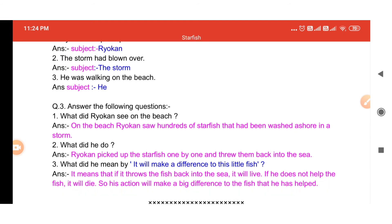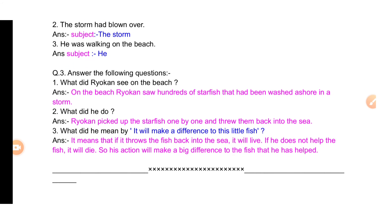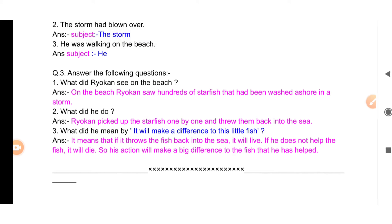Now answer the following questions — the most important part of the lesson. It is a very small lesson, you all know that. First question: what did Ryokan see on the beach? On the beach, Ryokan saw hundreds of starfish that had been washed ashore in a storm.